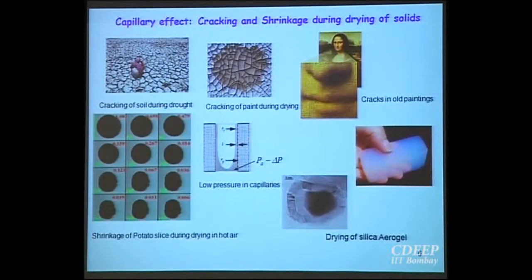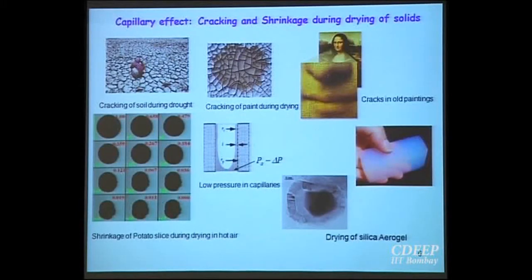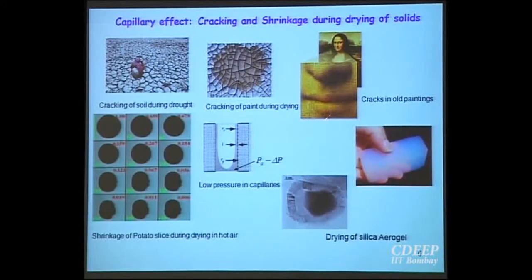The capillary effect has far-reaching consequences. For example, whenever a material dries, there can be a lot of cracking — such as cracking of soil during drought. Similarly, paint that is not properly made will develop cracks when it dries. A glaring example is the Mona Lisa, considered one of the most beautiful paintings in the world, but if you look closely you will find many cracks — it does not look as beautiful up close.